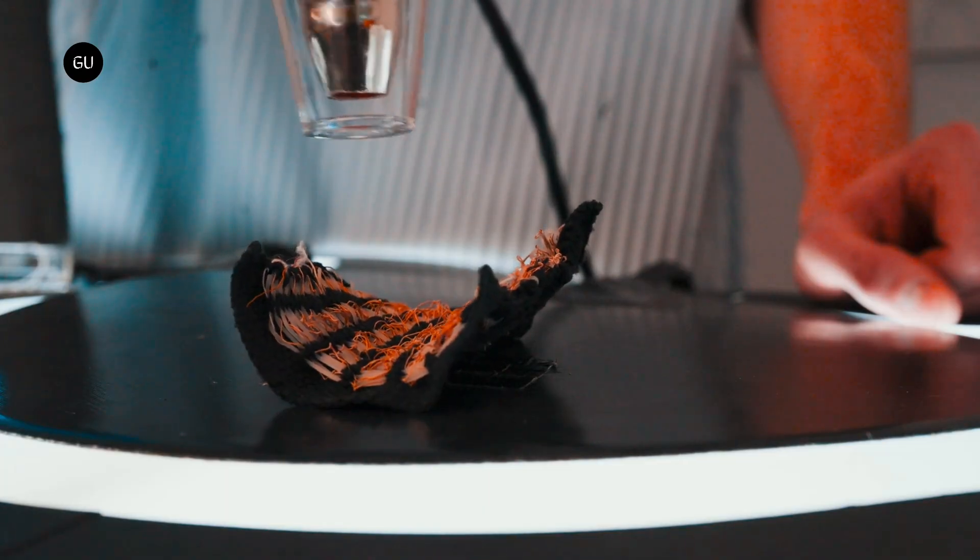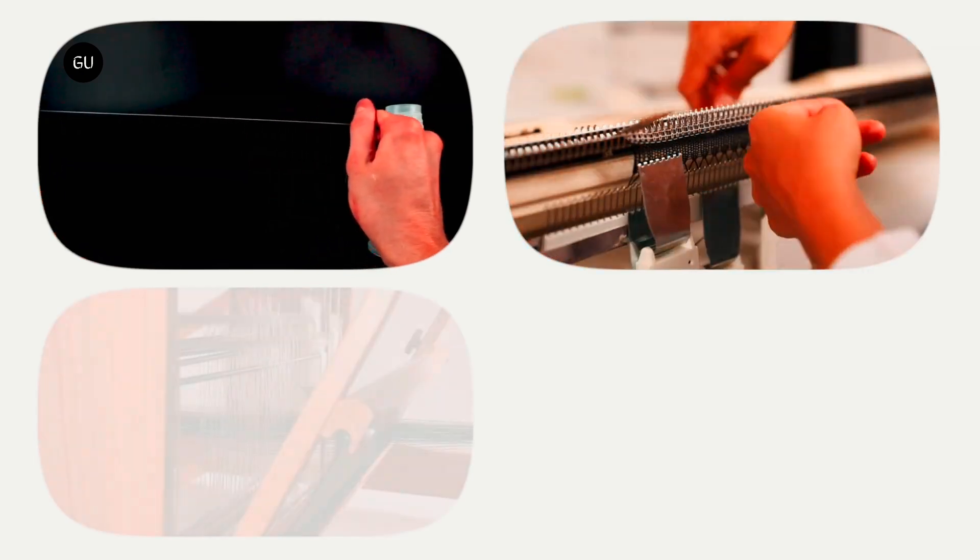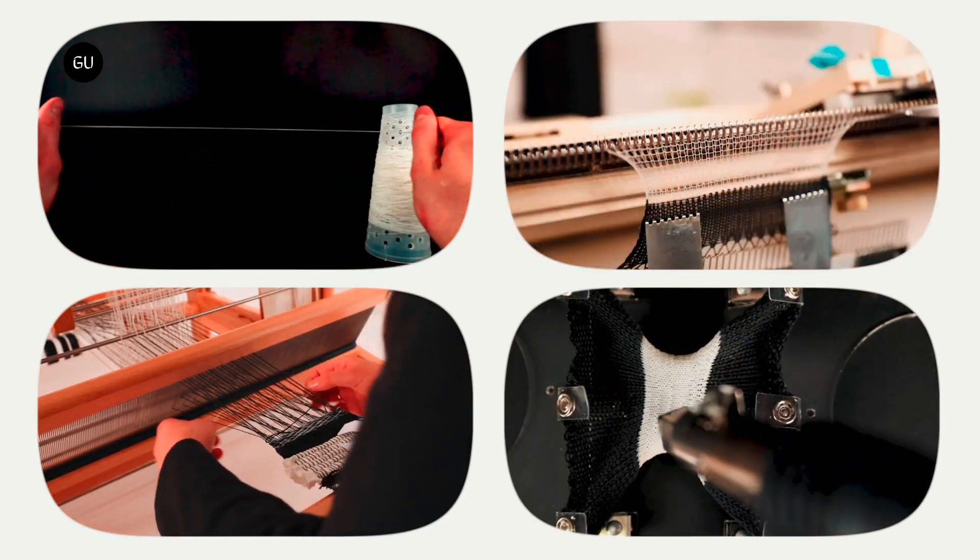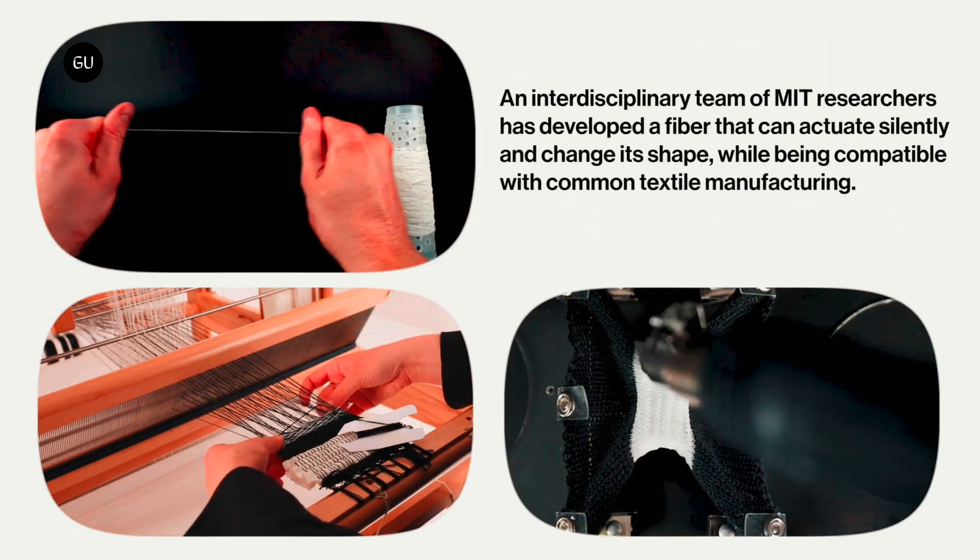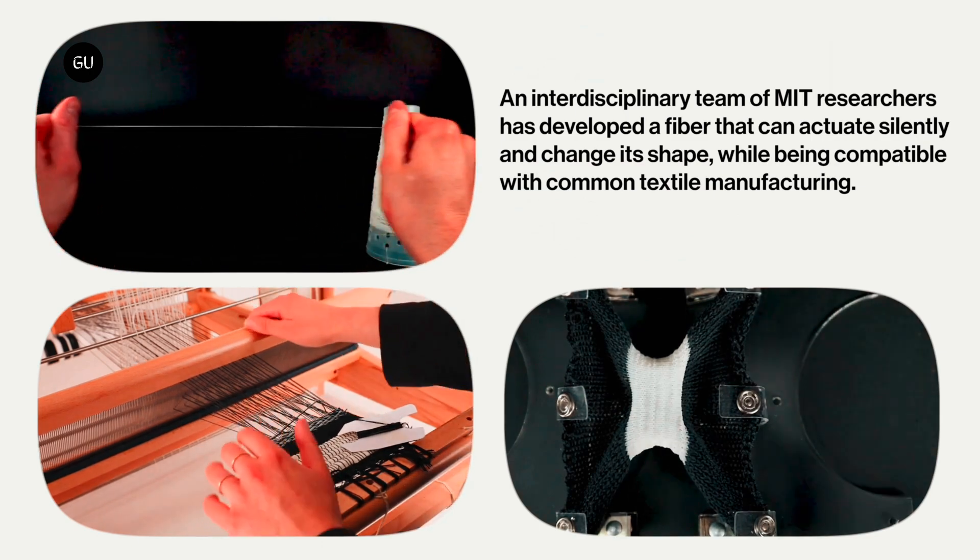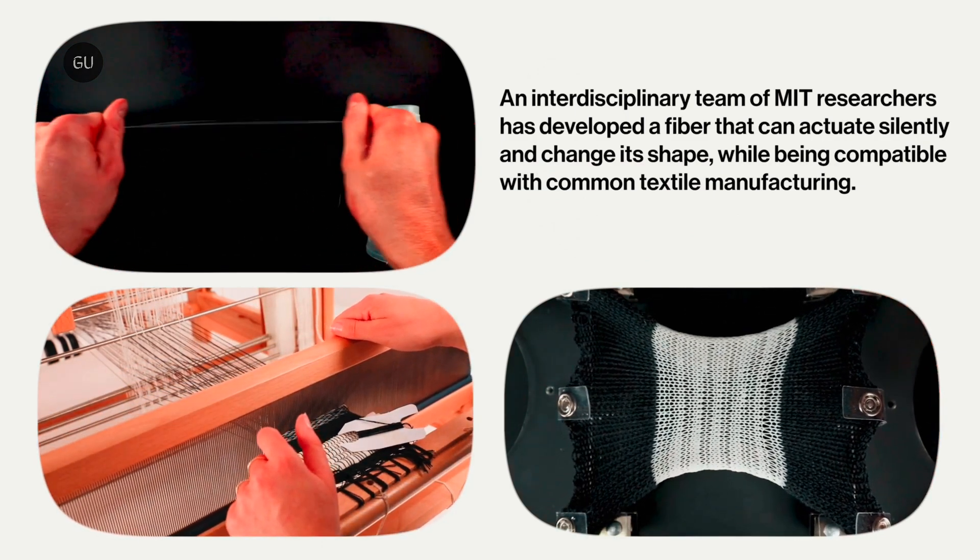The researchers plan to make Fibrobo's chemical components recyclable or biodegradable and streamline the polymer synthesis process so users without lab expertise can make it on their own. In the future, the researchers hope that people will be able to buy Fibrobo in a craft store, just like they would a ball of yarn, and use it to create their own morphing products.